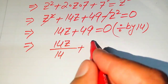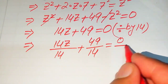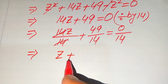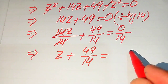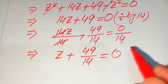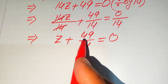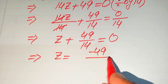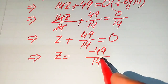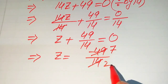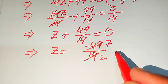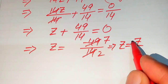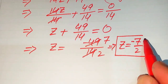Dividing both sides by 14: 14z/14 + 49/14 = 0/14. The 14s cancel, giving z + 49/14 = 0. Moving 49/14 to the right hand side: z = −49/14. Cancelling by a factor of 7, we get z = −7/2. This is the root obtained from the first method.